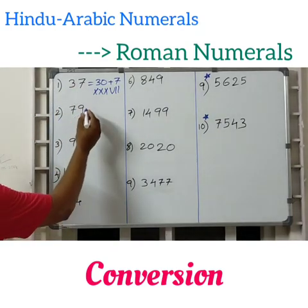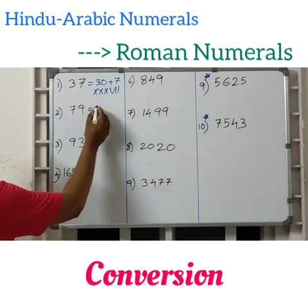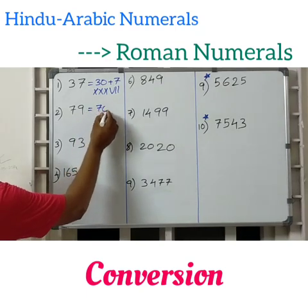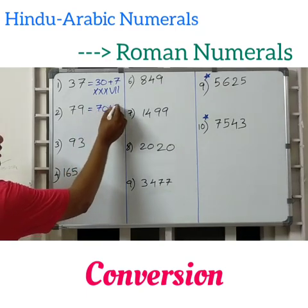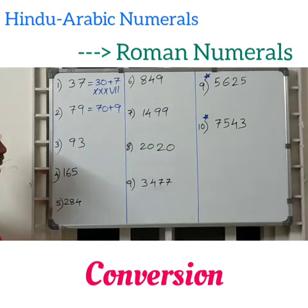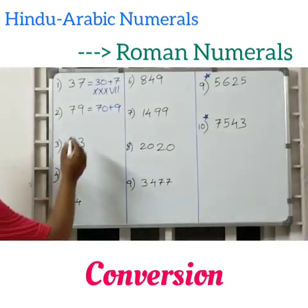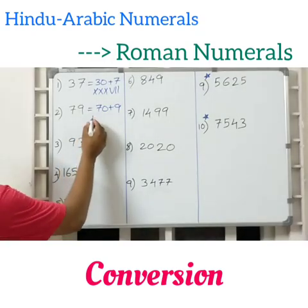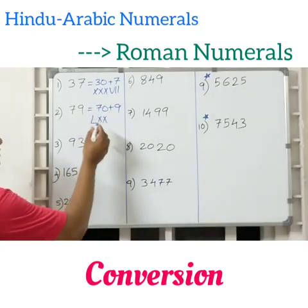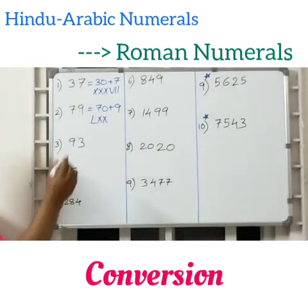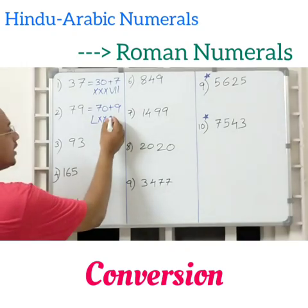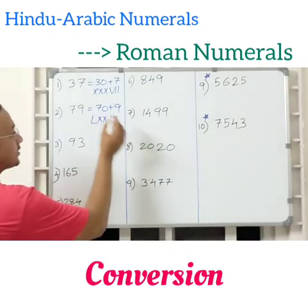Next, 79. First write the expanded form: 70 plus 9. You know how to write 70 — it is nothing but LXX. And 9 is nothing but IX.